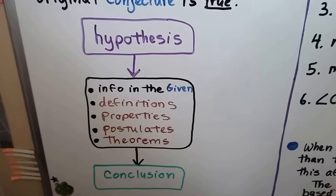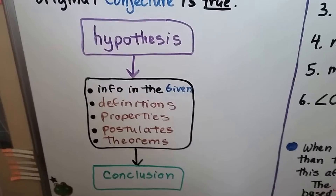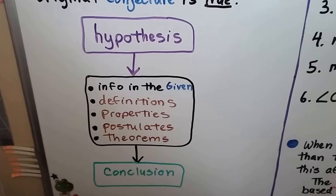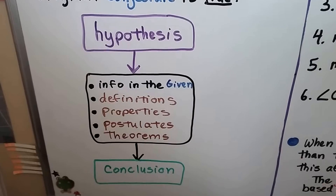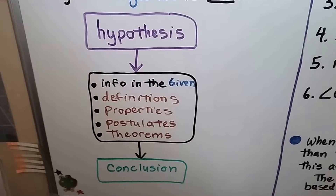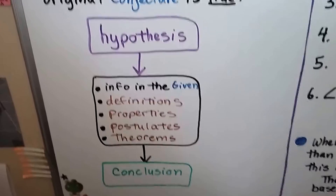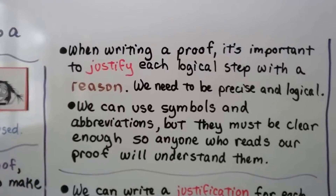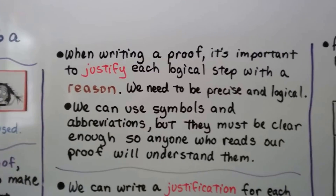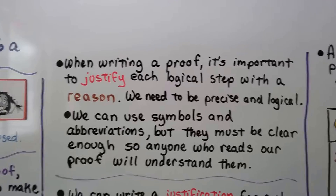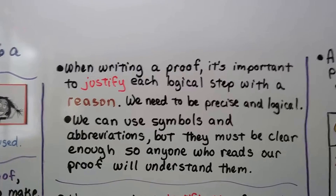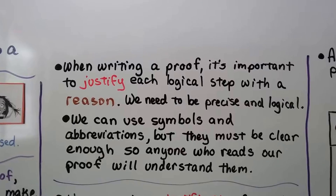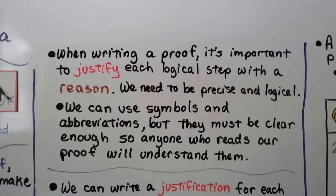We have our hypothesis, and that'll lead us to information in the given, definitions, properties, postulates, and theorems, and those will lead us to the conclusion. When writing a proof, it's important to justify each logical step with a reason. We need to be precise and logical. We can use symbols and abbreviations, but they must be clear enough so anyone who reads our proof will understand them.